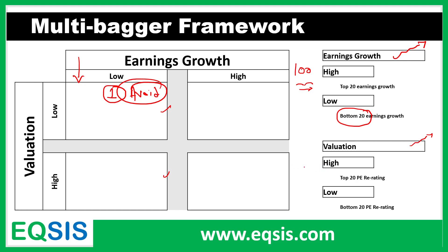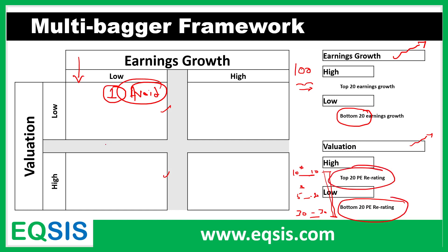For example: 10 years before, Company A's P/E was 10, and now it's still 10 — no re-rating. Company B: 10 years before it was 5, now it's 20 — that's a 4x re-rating. Another company: 30 before, now 70 — that's about 2.5x. We need to rank which companies have expanded their P/Es. From this, calculate whether it's the bottom 20 or top 20 in terms of P/E re-rating.